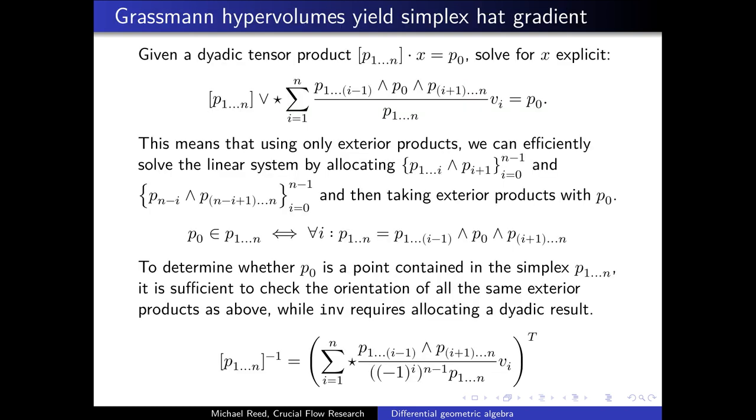Incidence relations can be applied using a matrix-free representation or a matrix representation. Given a dyadic tensor product equation in which we want to solve for x, we can do so explicitly. This means that using only exterior products, we can efficiently solve the linear system by allocating an ascending exterior product and a descending exterior product, and then taking the exterior products of them with p0. This was found to be very efficient in the Julia language, because the exterior products are statically allocated.